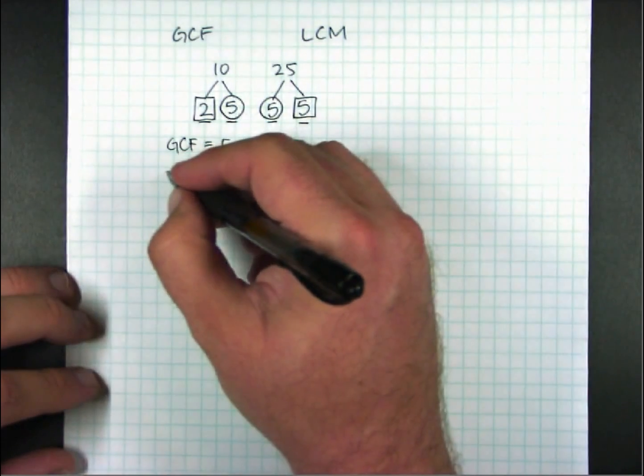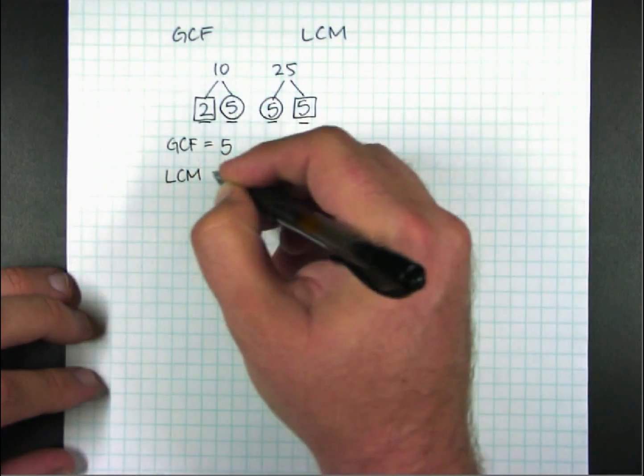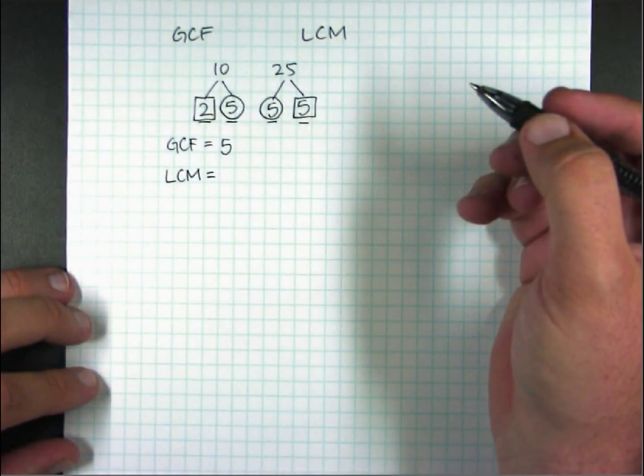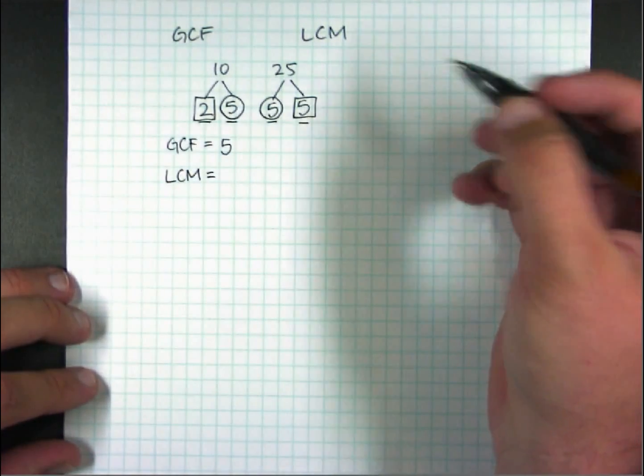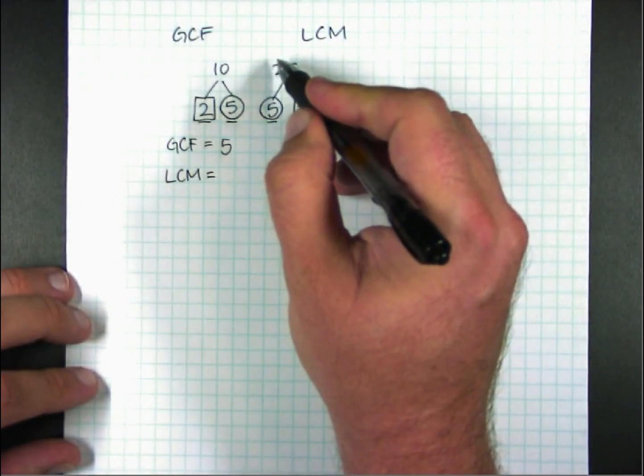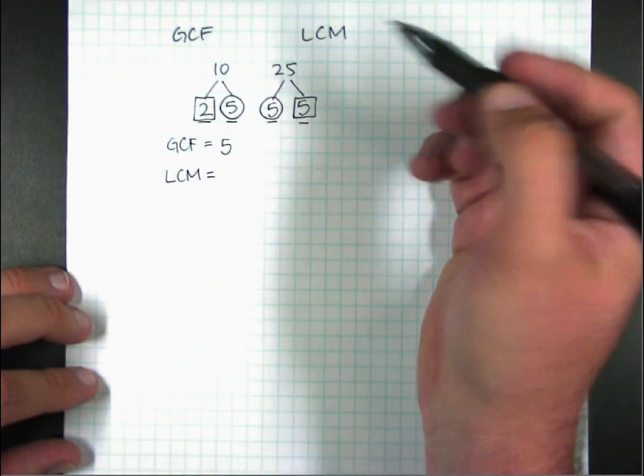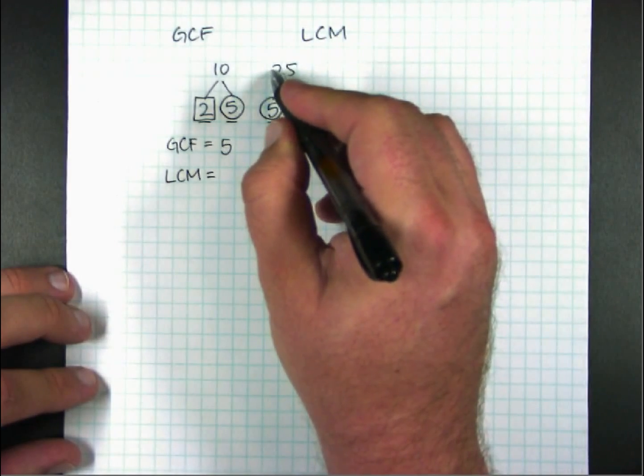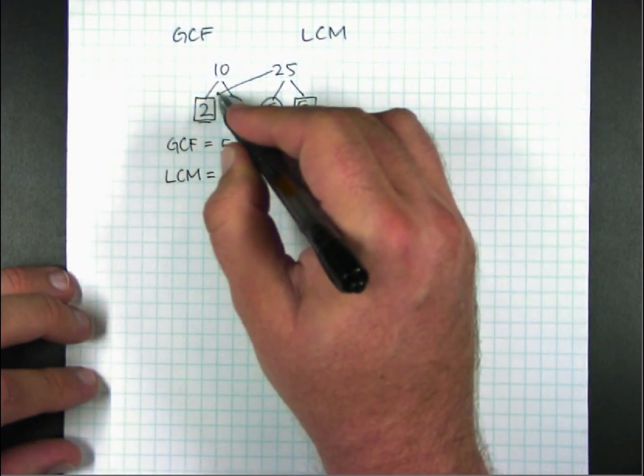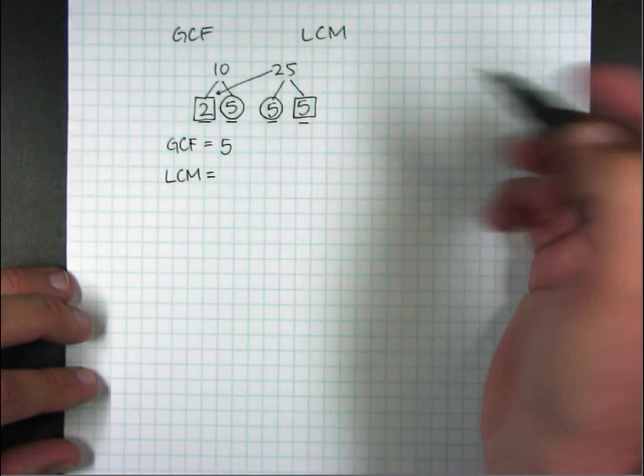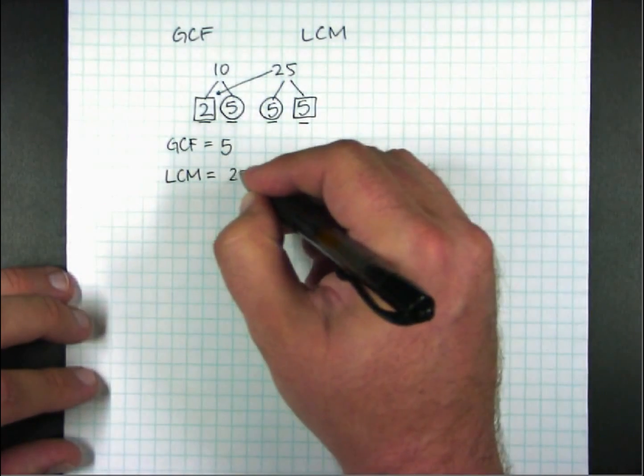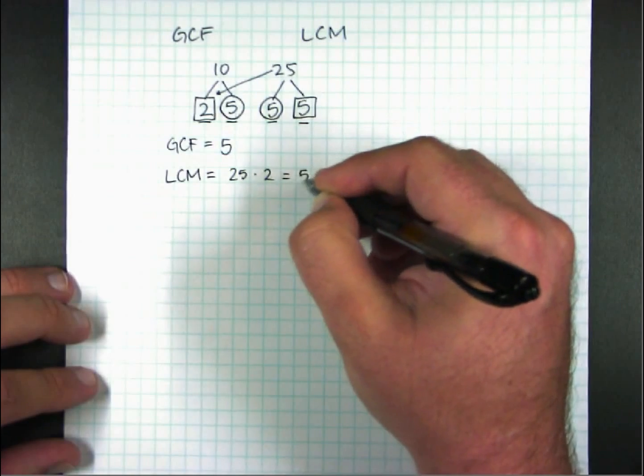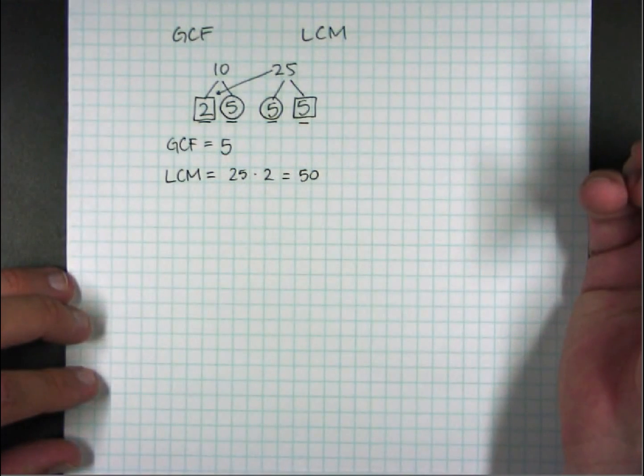The least common multiple, there are a couple ways to find it. But using the factor tree, the easiest way is to take one of the numbers. It doesn't matter which one. And I'll show you why. Take one of the numbers and multiply it by what's in the square on the other side. 25 times 2 is 50. So the least common multiple is 50.